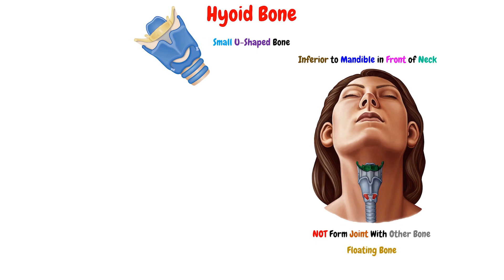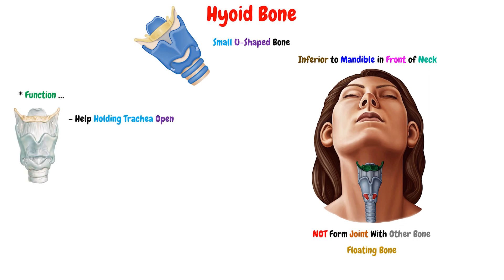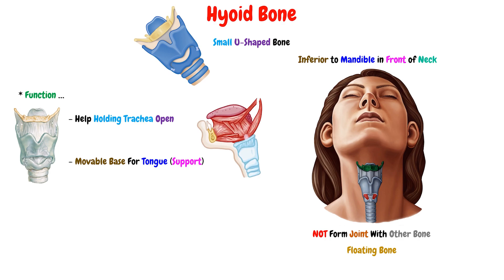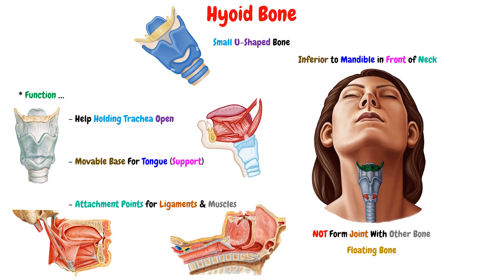This bone has three main functions. The first function is that it helps in holding the trachea open. The second function is that it acts as a movable base for the tongue to support it. And the last function is to provide attachment points for many ligaments and muscles, such as the jaw muscles, the larynx muscles, and the tongue muscles.